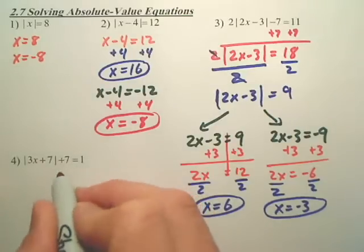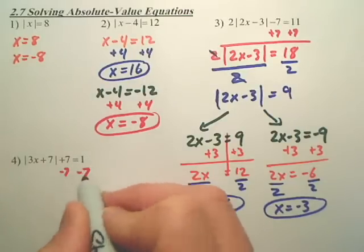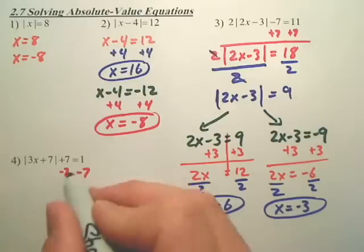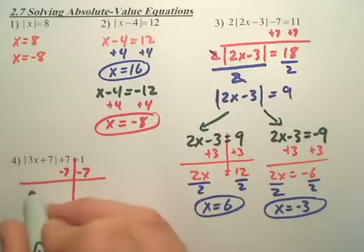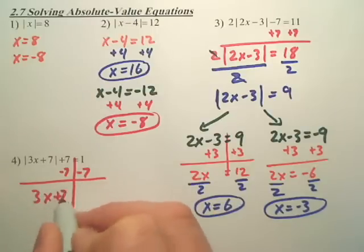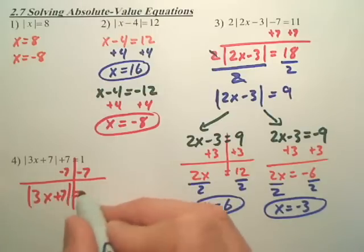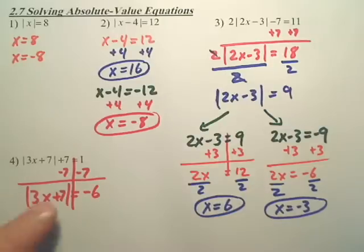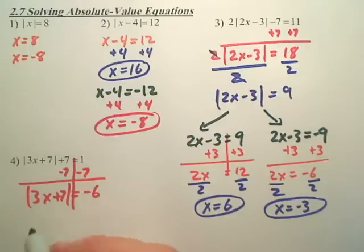Alright, one more. For this problem, we first want to minus the 7 over. And we got 3x plus 7 equals negative 6. That line is kind of annoying, sorry. Now, when we make two equations, you actually can stop.